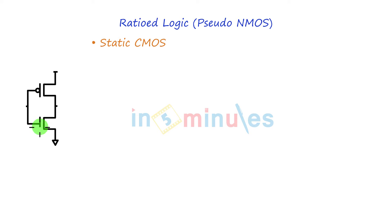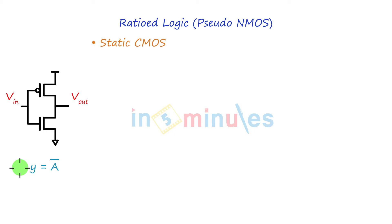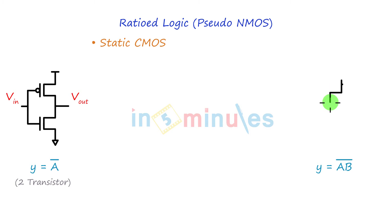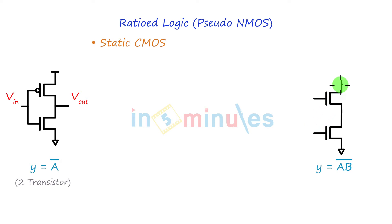If we can recollect, we will understand that for a static CMOS inverter where the expression was Y equal to A bar, we used two total transistors in the circuit. If we had to draw Y equal to AB bar, which is nothing but a NAND, we understood that we need to have pull-down circuits of A and B, and a pull-up circuit of two more PMOSs.